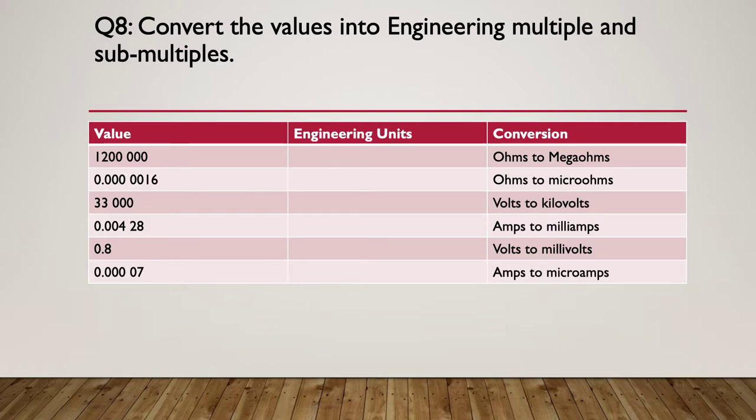Question eight. Convert the values in the table into engineering multiples and sub-multiples. So on the left-hand side we've got the values, and we're going ohms to mega-ohms, ohms to micro-ohms, volts to kilovolts, so on and so forth down the table, filling out the center of the table. So again, pause the video here and have a go at converting those values. Here's the hint. Remember we're working in engineering units. So kilos are times 10 to the 3, megas are times 10 to the 6, millis are times 10 to the minus 3, and micros are times 10 to the minus 6. So you've got to determine, am I moving a decimal point three or six points to the left or the right? So remember engineering units, we're always working in groups of threes.